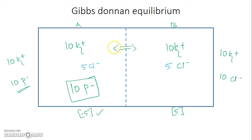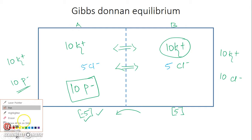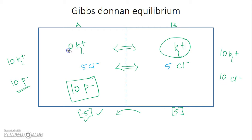Though there is no chemical gradient for potassium or chloride — both are in concentration equilibrium — there is now an electrical gradient: more negativity on side A and more positivity on side B. This negativity on side A attracts positive charges. The only positive ion that can move from side B is potassium, so at electrical equilibrium potassium redistributes to, say, 15 on side A and 5 on side B.